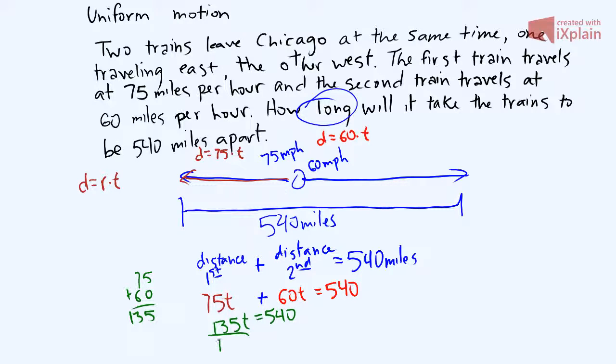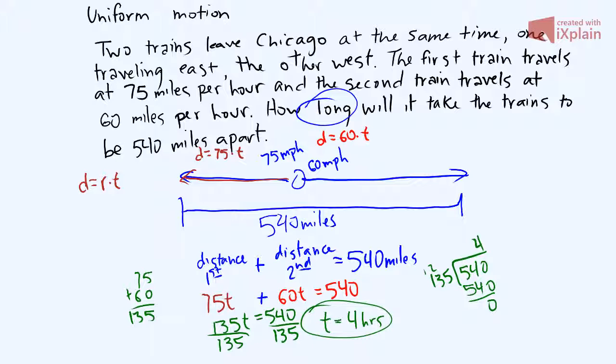Divide both sides by 135. And when you take 540 divided by 135, it goes in four times. Zero, carry the two, four, carry the one, five. Goes in evenly. So we know that the time is four hours. So it'll take four hours for them to be 540 miles apart.